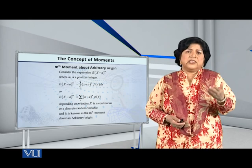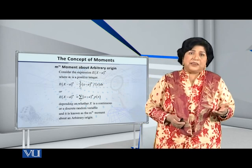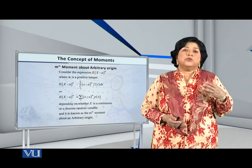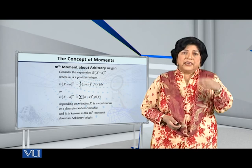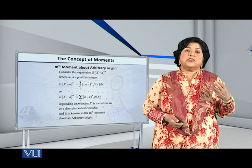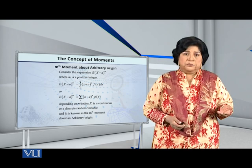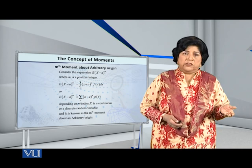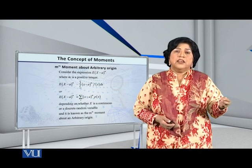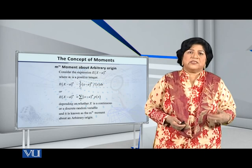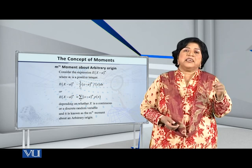This is the formula of the m-th moment about an arbitrary origin. When we have a continuous variable, integration is used, and when we have a discrete variable, summation is used. Since m is a positive integer, m can be equal to 1, 2, 3, 4, and so on — giving us the first moment, second moment, third moment, fourth moment, and so on.